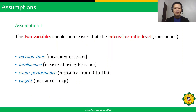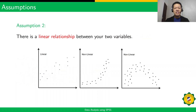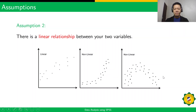Here are the assumptions that must hold true for a dataset in Pearson R. First, the two variables should be measured at the interval or ratio level — examples include Revision Time, Intelligence, Exam Performance, and Weight. Second, there is a linear relationship between the two variables. This is an example of a scatter plot that is linear, and these are some non-linear scatter plots.